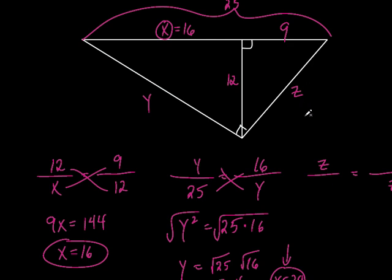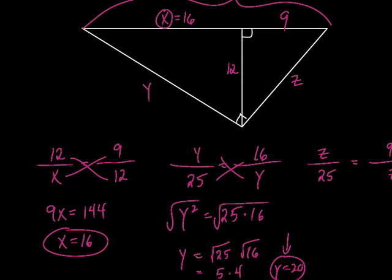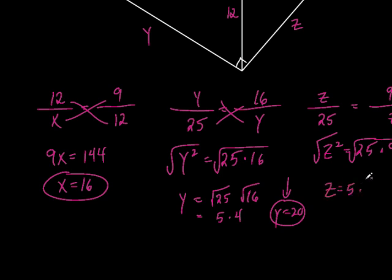Let's do Z. Z is the geometric mean between the whole hypotenuse, 25, and the adjacent segment 9. So Z squared equals 25 times 9. Take the square root: square root of 25 is 5, square root of 9 is 3, so Z equals 5 times 3, which is 15. That's the kind of stuff you're going to see on the worksheet — front and back, due on Monday.